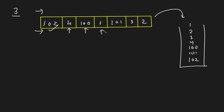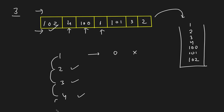Next we move to 1. We check if 0 exists in the hash set — it doesn't. So we start iterating: 2 exists, 3 exists, 4 exists, 5 does not. So we made 4 iterations, meaning the consecutive sequence 1, 2, 3, 4 has length 4, which is greater than the previous maximum of 3. We update our longest consecutive sequence to 4.